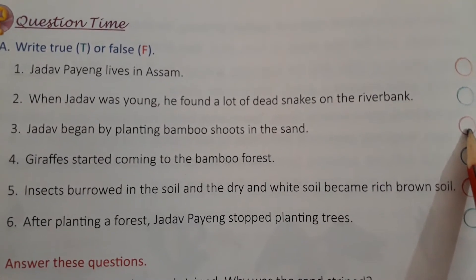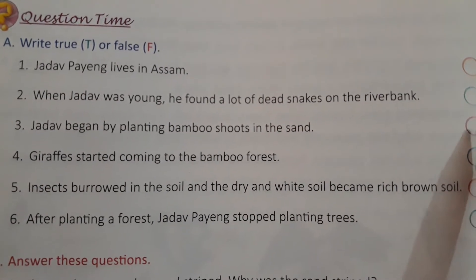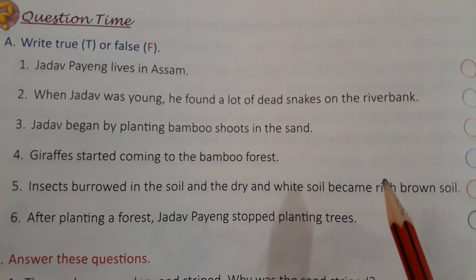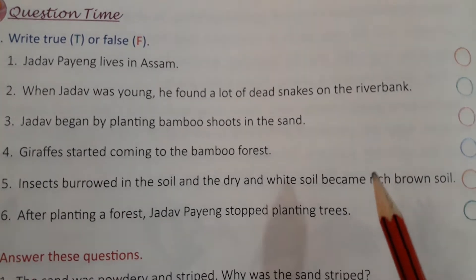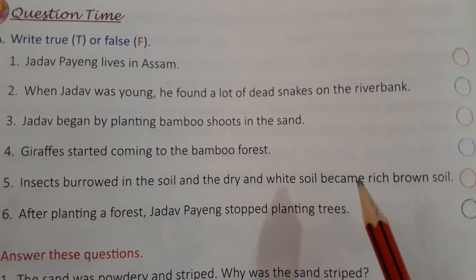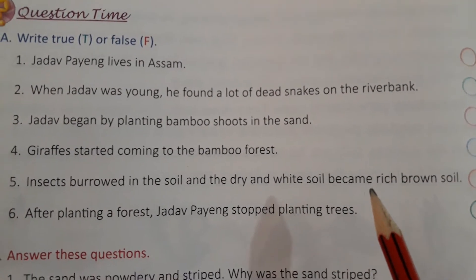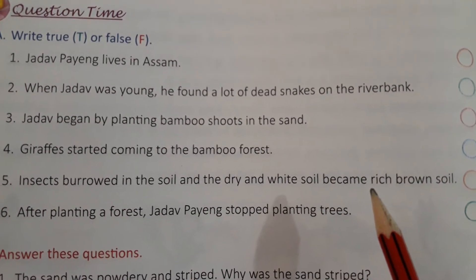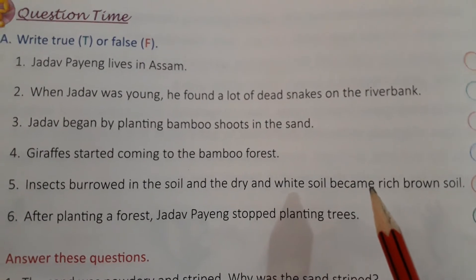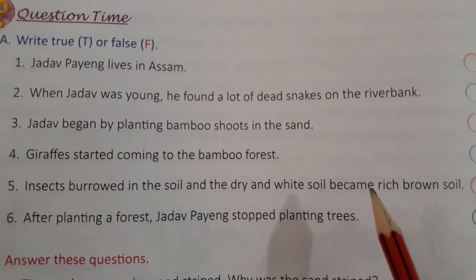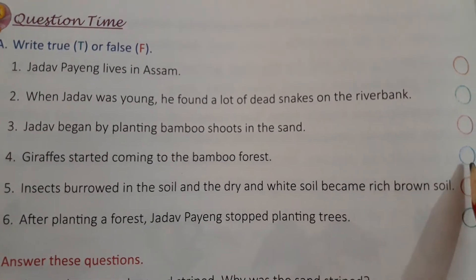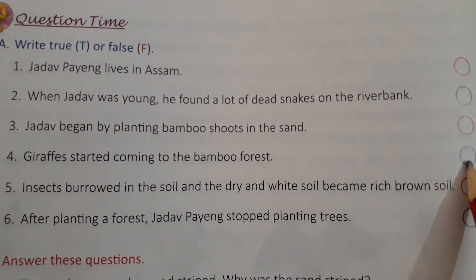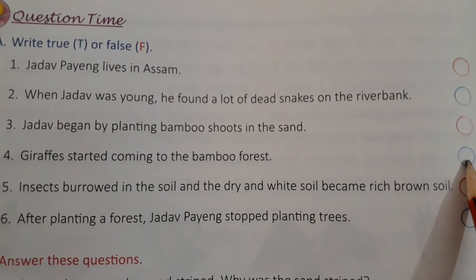Fourth sentence: Giraffes started coming to the bamboo forest. क्या जिराफ आ रहे थे bamboo forest में? नहीं — भूल. तो यहाँ पर हम लिखेंगे False. F, false.